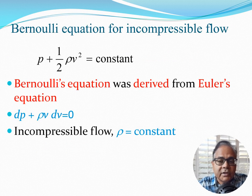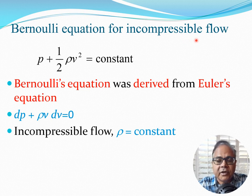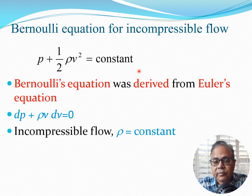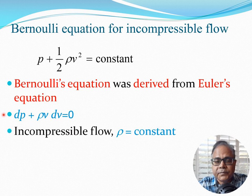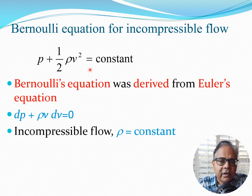Now I'll derive Bernoulli's equation for compressible flow, but first let's recall the incompressible form from a few lectures ago: p + ½ρv² = constant. This is derived from Euler's equation dp + ρv·dv = 0, integrated assuming ρ is constant — meaning we can take it outside the integral sign. So Bernoulli's equation for incompressible flow is essentially an integrated form of the Euler equation.